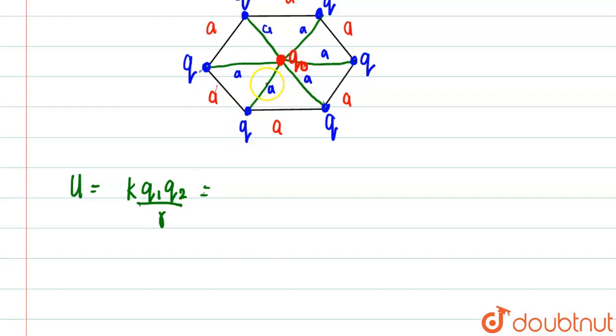That means what? If we see distance is same, charges both the charges if we see Q0 and any Q. That means Q1 and Q2 are same and K is basically a constant.